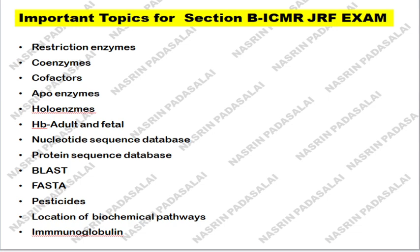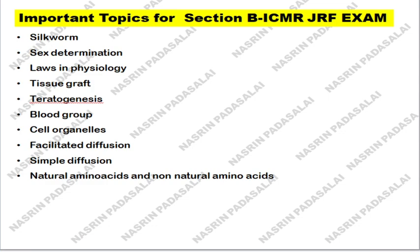With respect to bioinformatics, study nucleotide sequence databases, the list of nucleotide sequence databases, the list of protein sequence databases, and get to know about BLAST — these four topics alone are sufficient for bioinformatics. Next, know about the location of biochemical pathways and the structure of immunoglobulins — IgA, IgG, IgE — and where each immunoglobulin is present. Next, silkworm — at least one question is always asked from silkworm. Know about the sex determination pathway and sex determination in various organisms. Know about recent tissue grafts performed in humans.